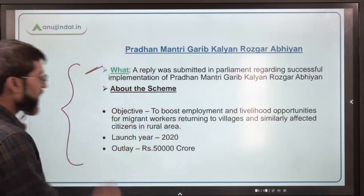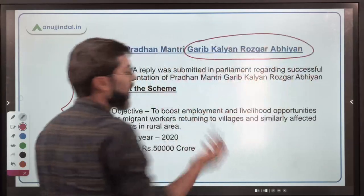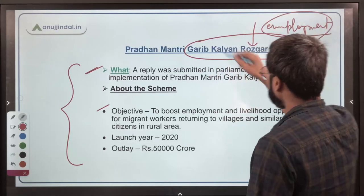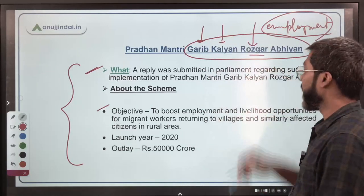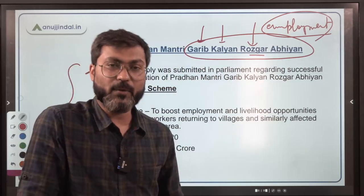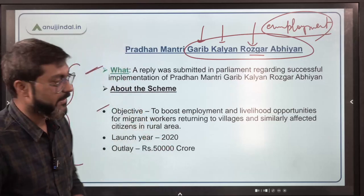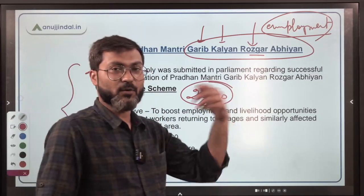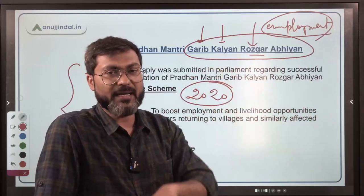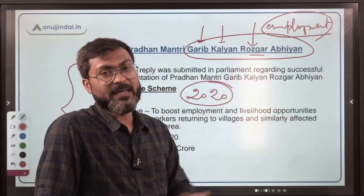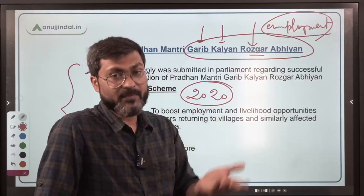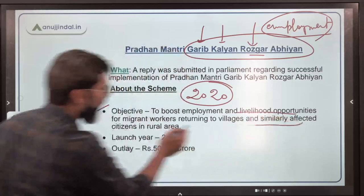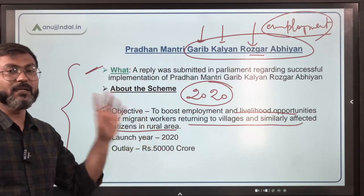The objective of Garib Kalyan Rozgar Abhiyan: 'Garib Kalyan' means welfare and 'Rozgaar' means employment, so this scheme caters to the employment of poor people. The scheme was launched in 2020 during the lockdown when many people migrated from their place of work to their place of origin. Since there was no employment at their origin, this scheme was launched to provide employment to those migrant workers.